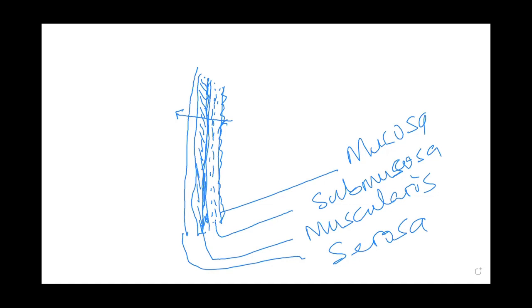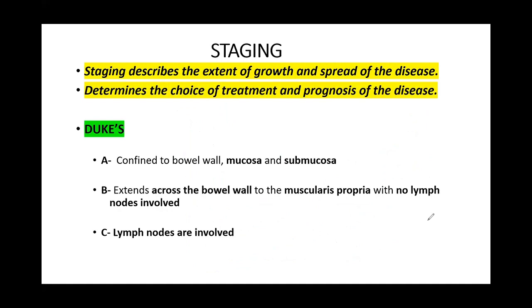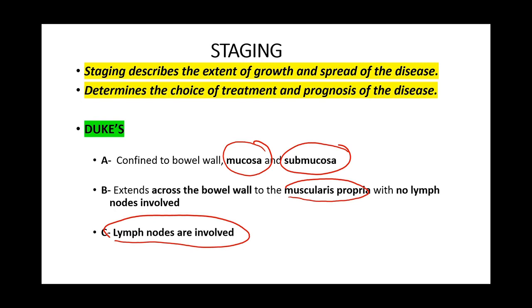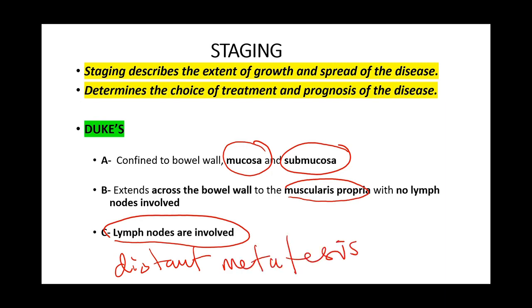Coming to the first form of staging, which is the Duke staging. Duke staged colon cancer into A, B, and C. A: the tumor is confined to the mucosa and the submucosa. B: it extends across the bowel wall to the muscularis propria, but no lymph node is involved. C: the lymph nodes are involved. The limitation is it doesn't take into consideration distant metastasis, hence it requires modification.